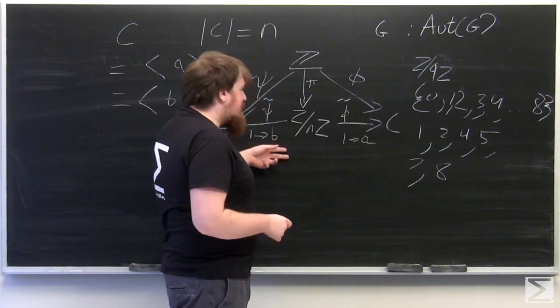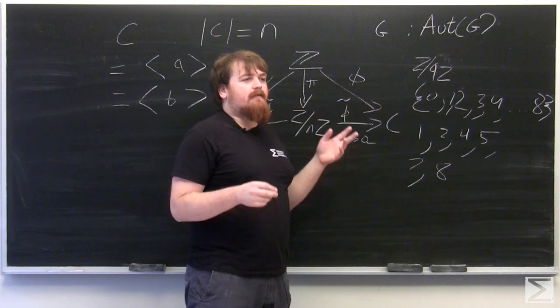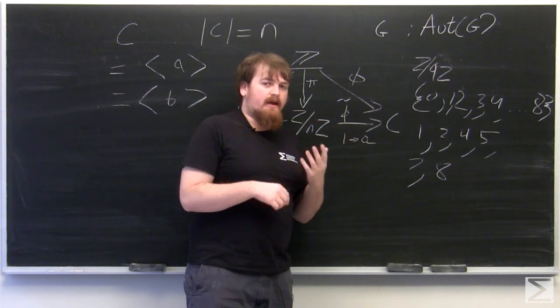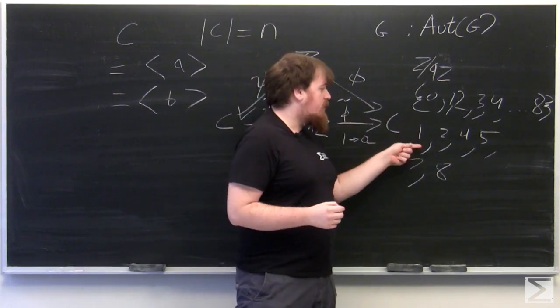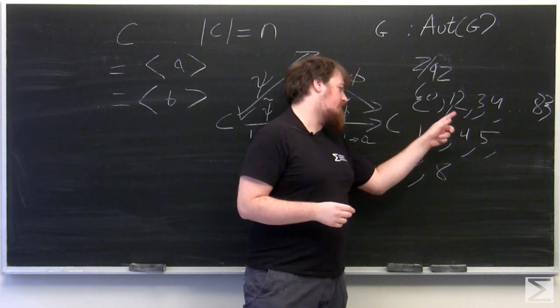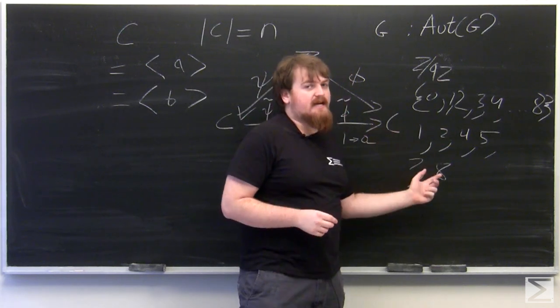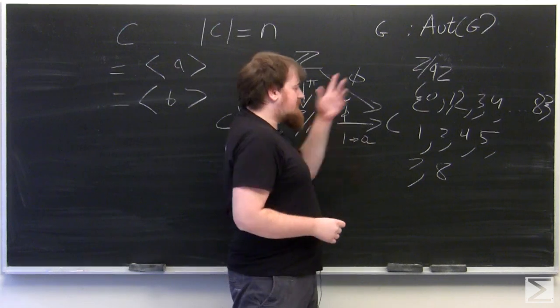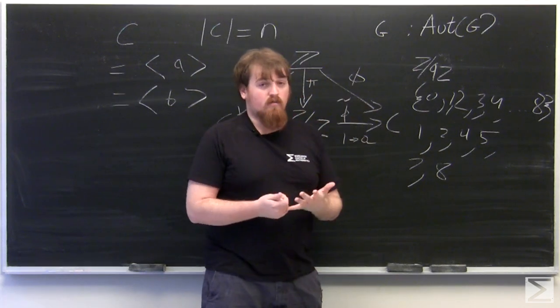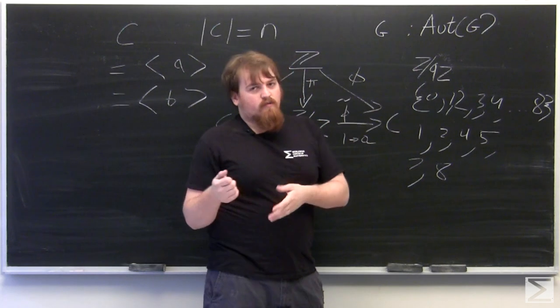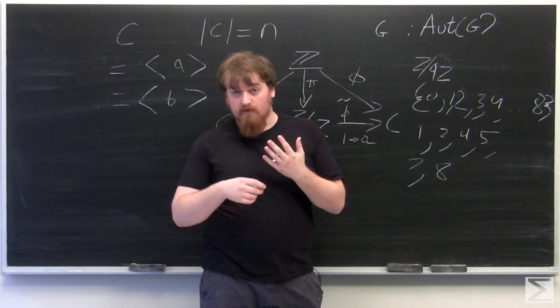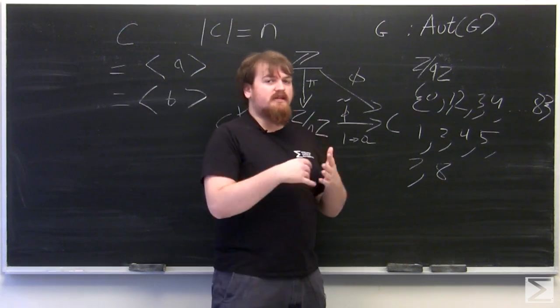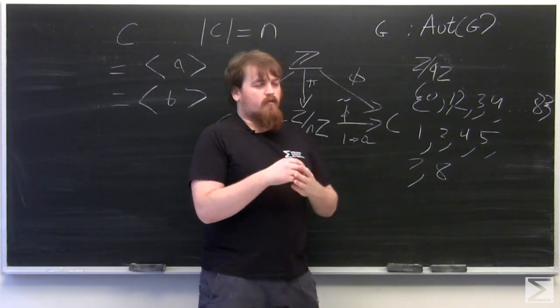So using this diagram, we can make an automorphism that sends 1 to 1, 1 to 2, 1 to 4, 1 to 5, 1 to 7, or 1 to 8. As it turns out, these six automorphisms of Z mod 9Z, one of which is the identity automorphism, and the identity automorphism is always the identity element of the automorphism group, those six automorphisms form the automorphism group.